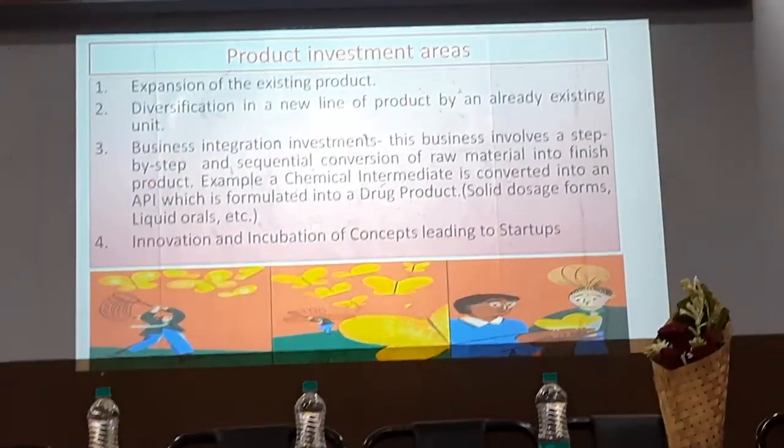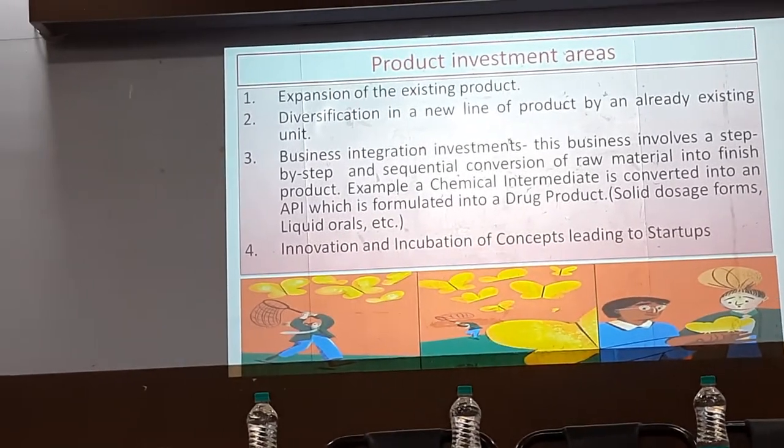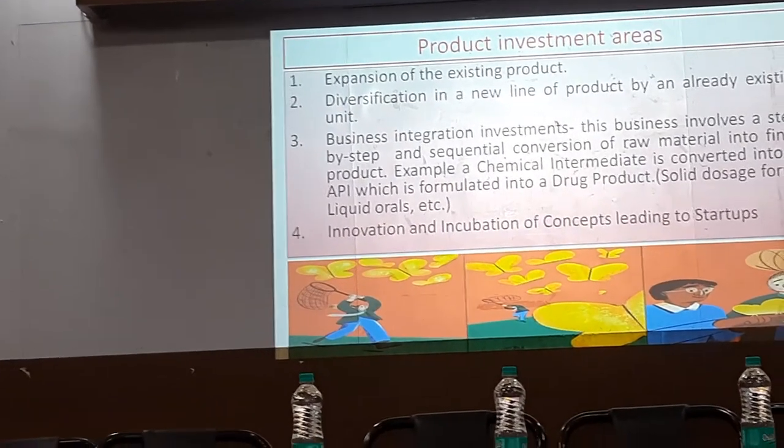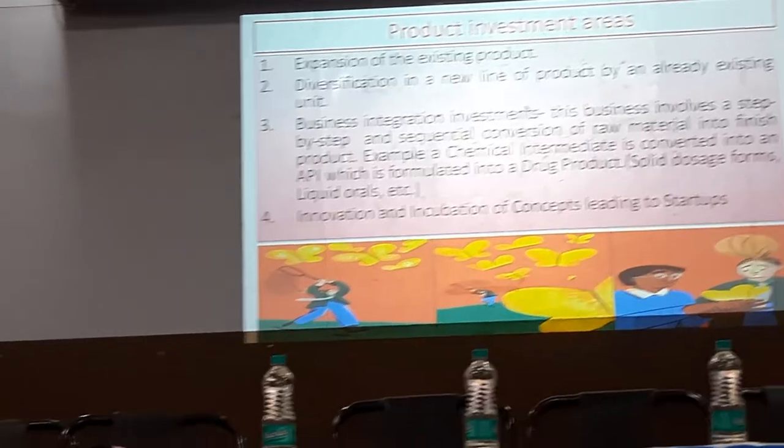Or what I could do is go further. The API is being sent to a formulation unit where it is being manufactured into tablets, liquid, oil, and so on. I would want to start my own formulation unit. I remember Hindustan Antibiotics — they used to manufacture a lot of antibiotics and then thought of diversifying by having a formulation development unit next to their antibiotic unit. That is known as a business integration investment.